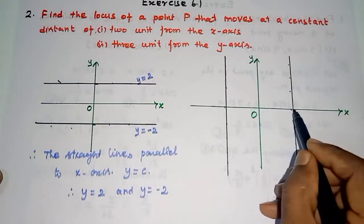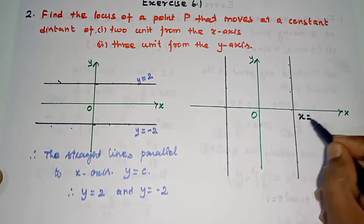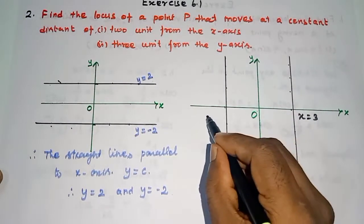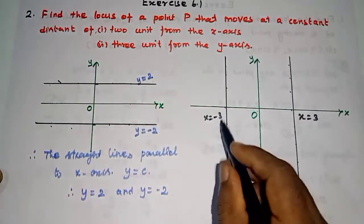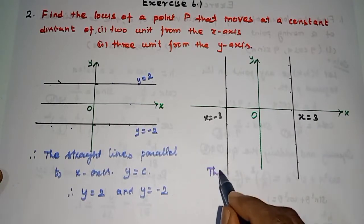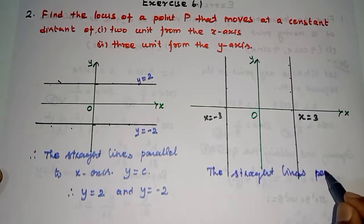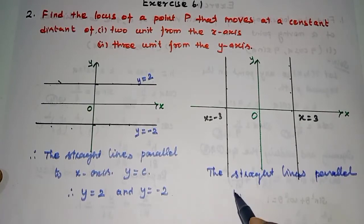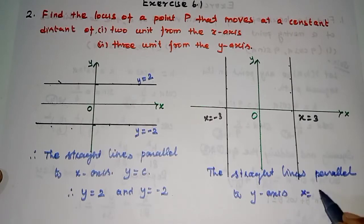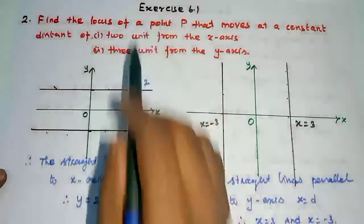We get — origin, there are 3 units. In the point, x is equal to 3. This is x is equal to minus 3. So in the line equation, x is equal to minus 3 and x is equal to plus 3. The straight lines are parallel to the y-axis. A line parallel to the y-axis has the standard form x is equal to d. Therefore, x is equal to 3 and x is equal to minus 3. It is the locus of the point.